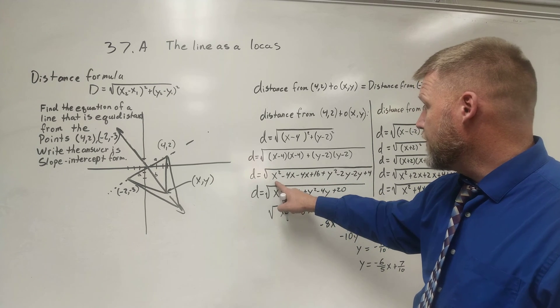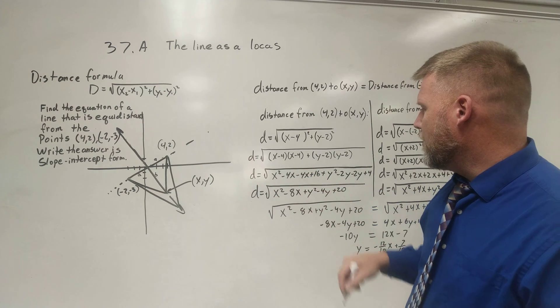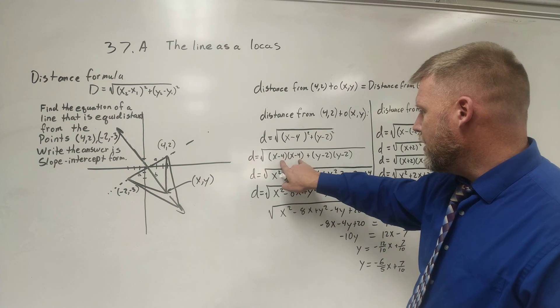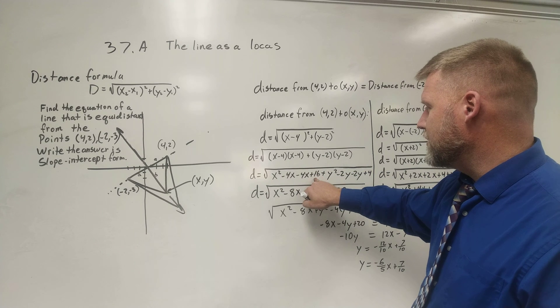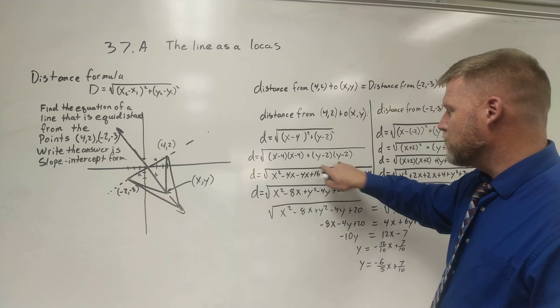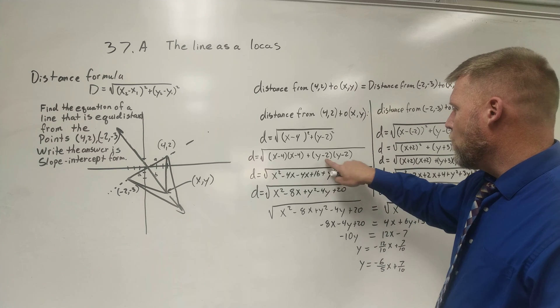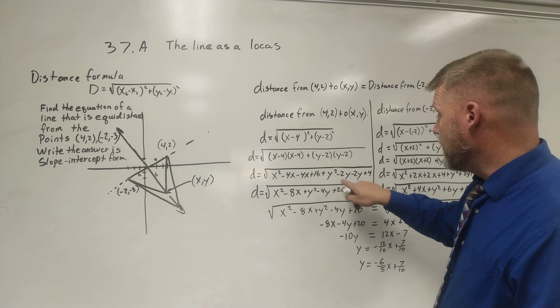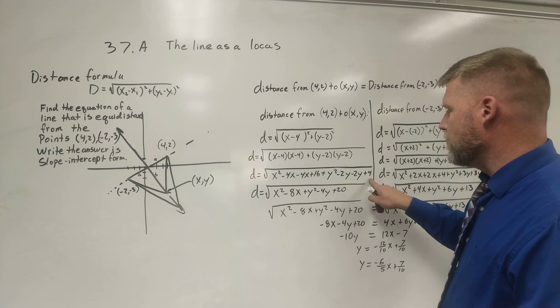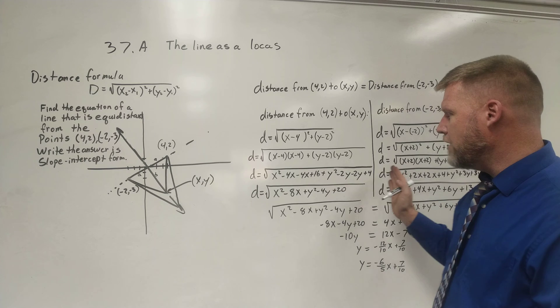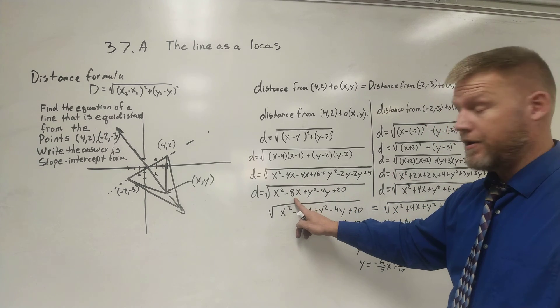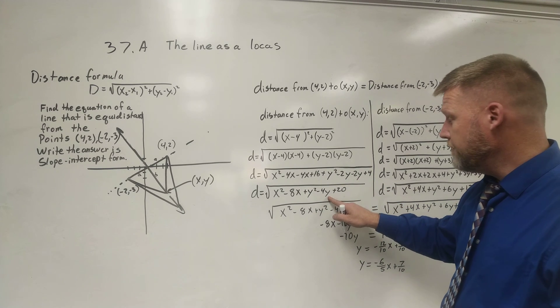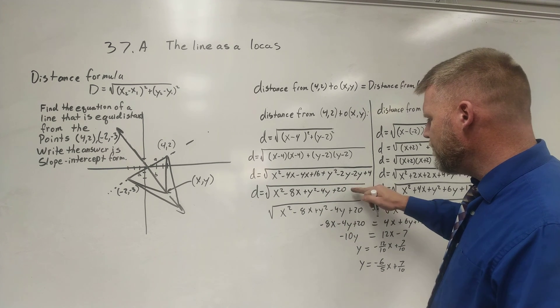x times x is x squared. x times negative 4 is negative 4x. Negative 4 times x, negative 4x. negative 4, negative 4, positive 16. I move over to my y's. y times y, y squared. y times negative 2, negative 2y. Negative 2 times y, negative 2y. Negative 2 times negative 2, positive 4. I start adding some like terms here. Negative 4, negative 4 is negative 8. Negative 2y and negative 2y is negative 4y. And I end up with this formula right here.